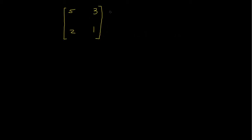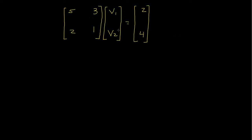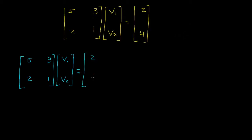Let's look at a 2-by-2 system of two equations and two unknowns. The coefficients are 5, 3, 2, 1. The two unknown variables are v1 and v2. The known quantities are 2 and 4. I'd like to decompose the known quantities into one component with the value 2 and 0. Solving this system of equations with the driving function 2 and 0, I find that v1 is equal to negative 2 and v2 is equal to 4.